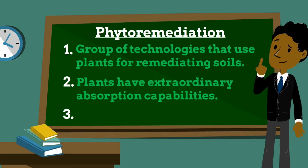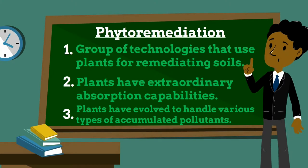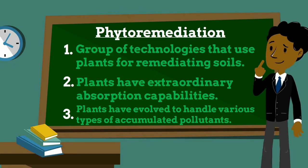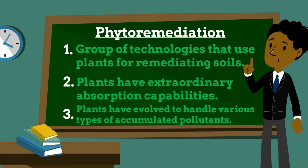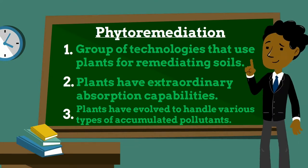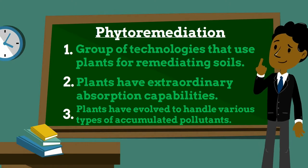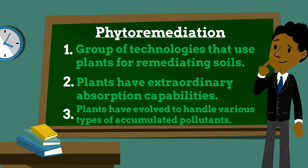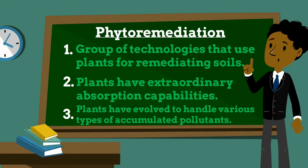The plants can be subsequently harvested, processed, and disposed of. Plants have evolved a great diversity of genetic adaptations to handle the accumulated pollutants that occur in the environment. Growing and, in some cases, harvesting plants on a contaminated site as a remediation method is a passive technique that can be used to clean up sites with shallow, low to moderate levels of contamination.